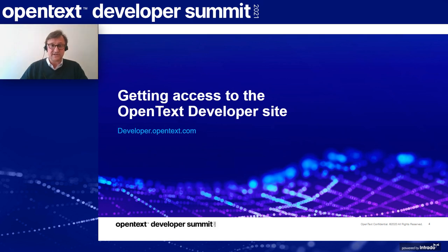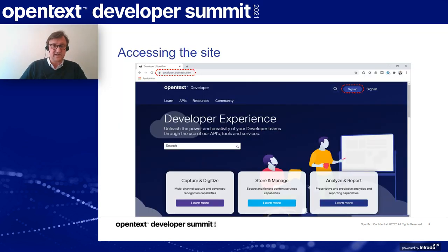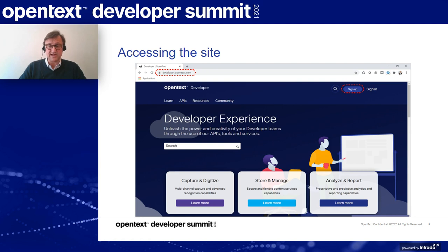So first of all, how to get access to the OpenText Developer site? That's quite easy. You need to browse to developer.opentext.com and you will get that kind of screen. At the top right corner, you will have a sign-up button that you can press to get full access to this developer website.